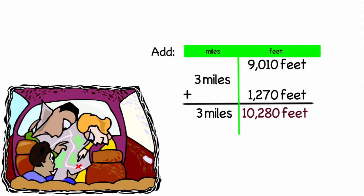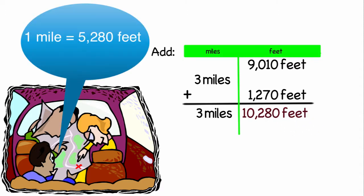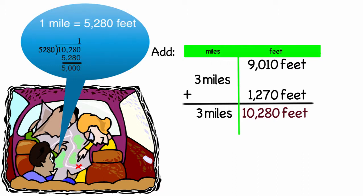But that's more than a mile. One mile is 5,280 feet. So again, I'm going to divide the feet that equals one mile into my feet, that it goes in one time with 5,000 feet left over.